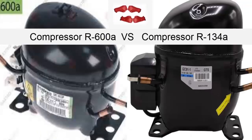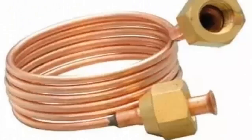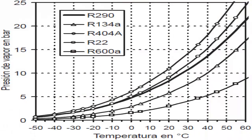The size of the capillary tube for the same cooling capacity of the R600A and R134A compressors is completely different. The working pressures of both compressors are totally different, with R600A gas having very low values.